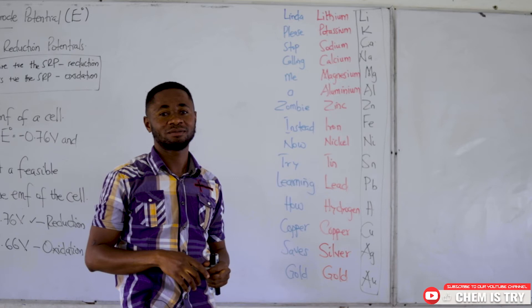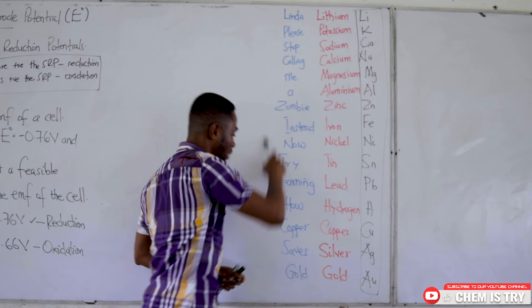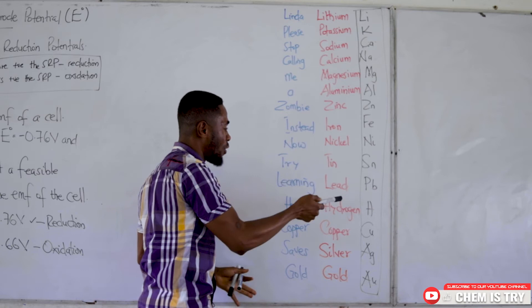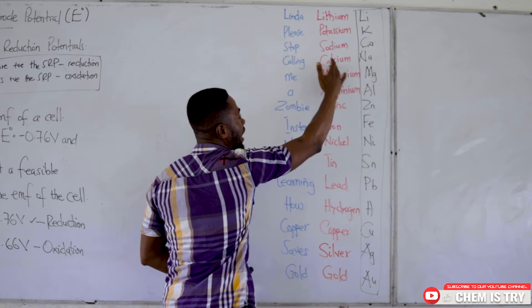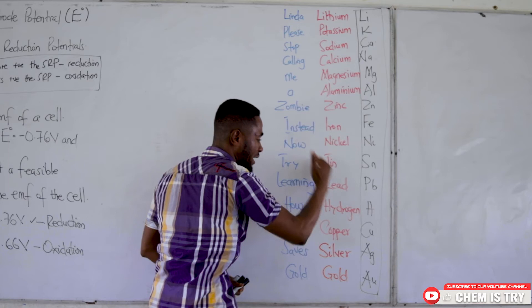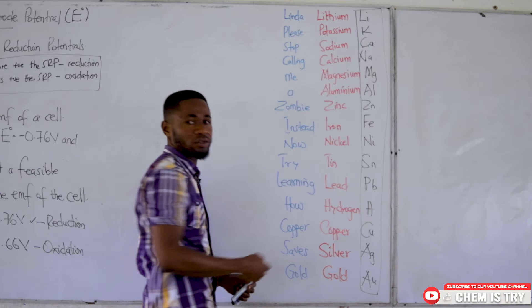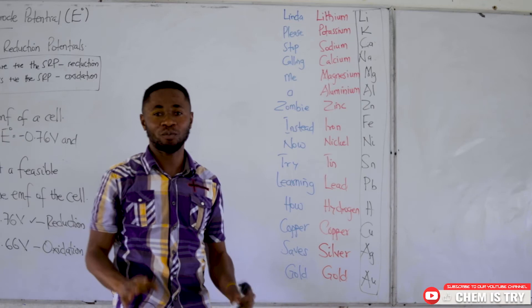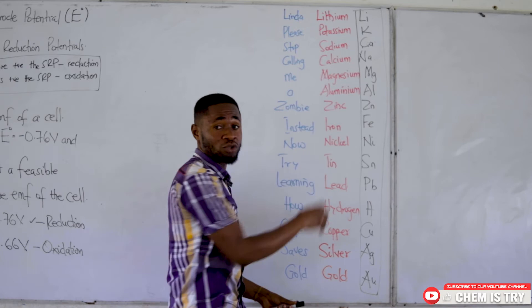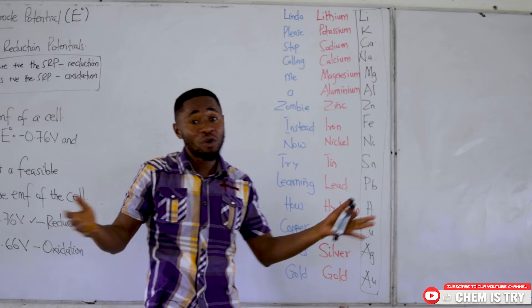Using this approach — 'Linda please stop calling me a zombie, instead now try learning how copper saves gold' — the first letters give us: Lithium, Potassium, Sodium, Calcium, Magnesium, Aluminium, Zinc, Iron, Nickel, Tin, Lead, Hydrogen, Copper, Silver, and Gold. Write down the chemical symbols, then swap the positions of sodium and calcium to complete the electrochemical series.